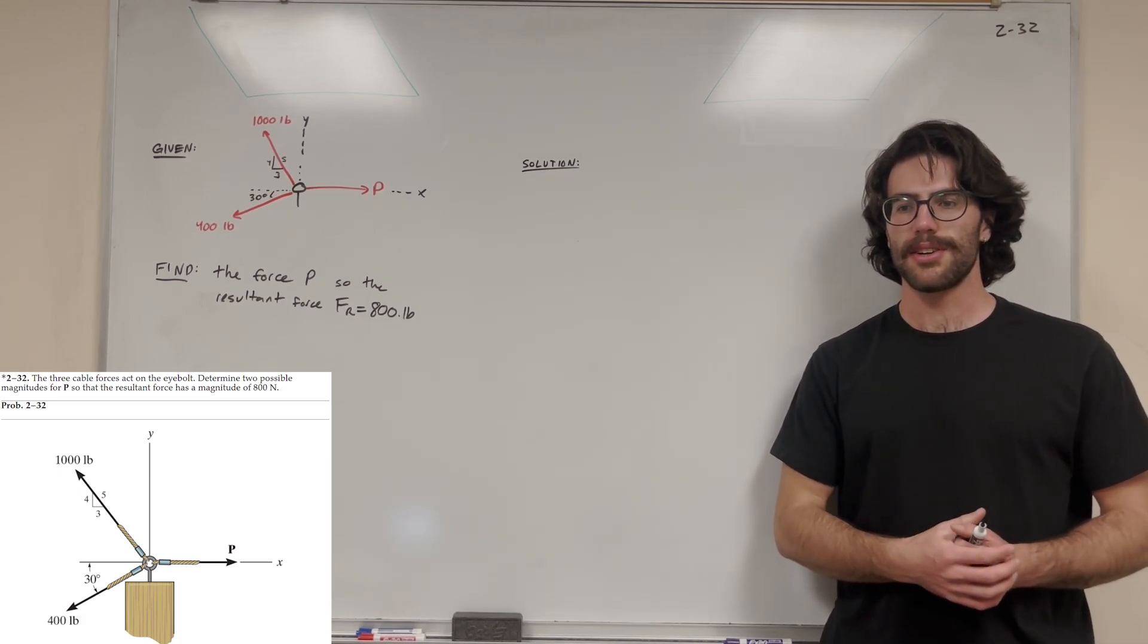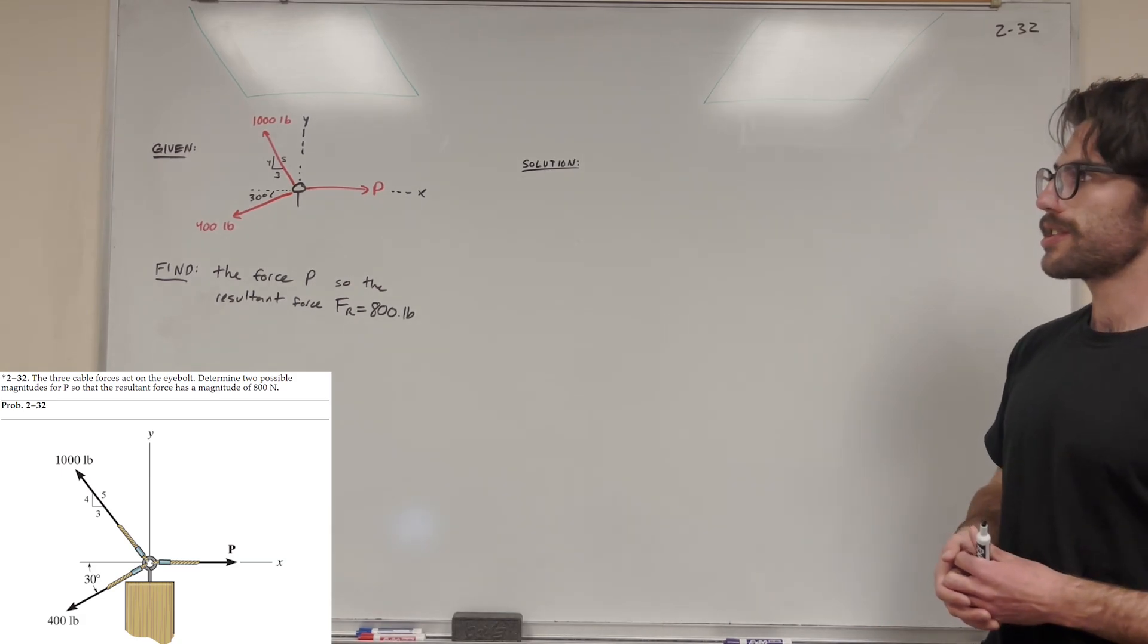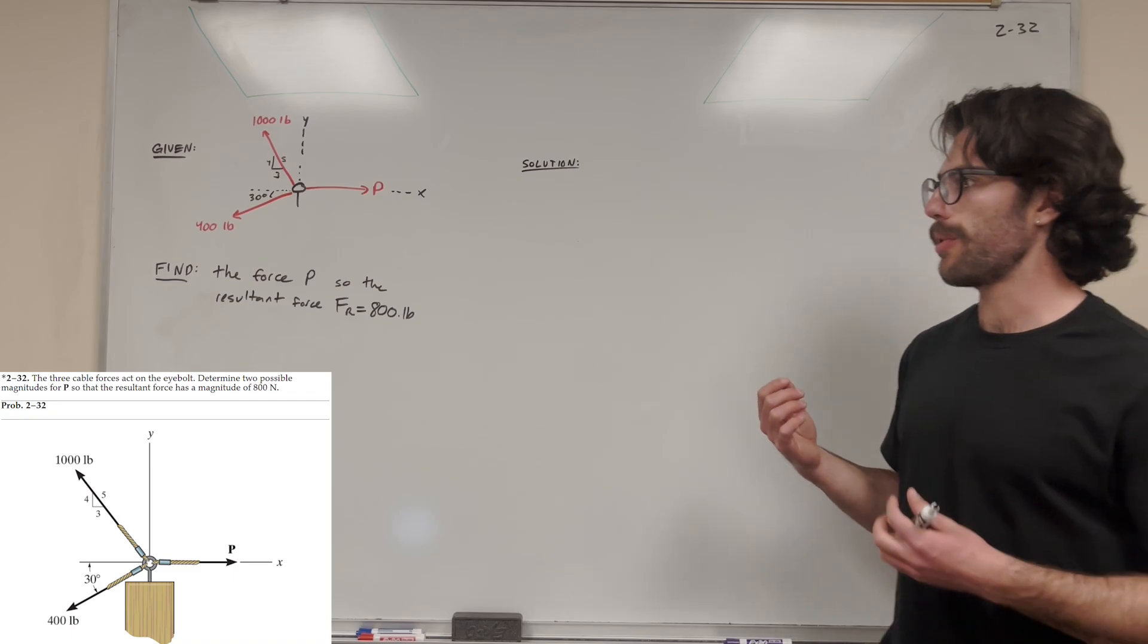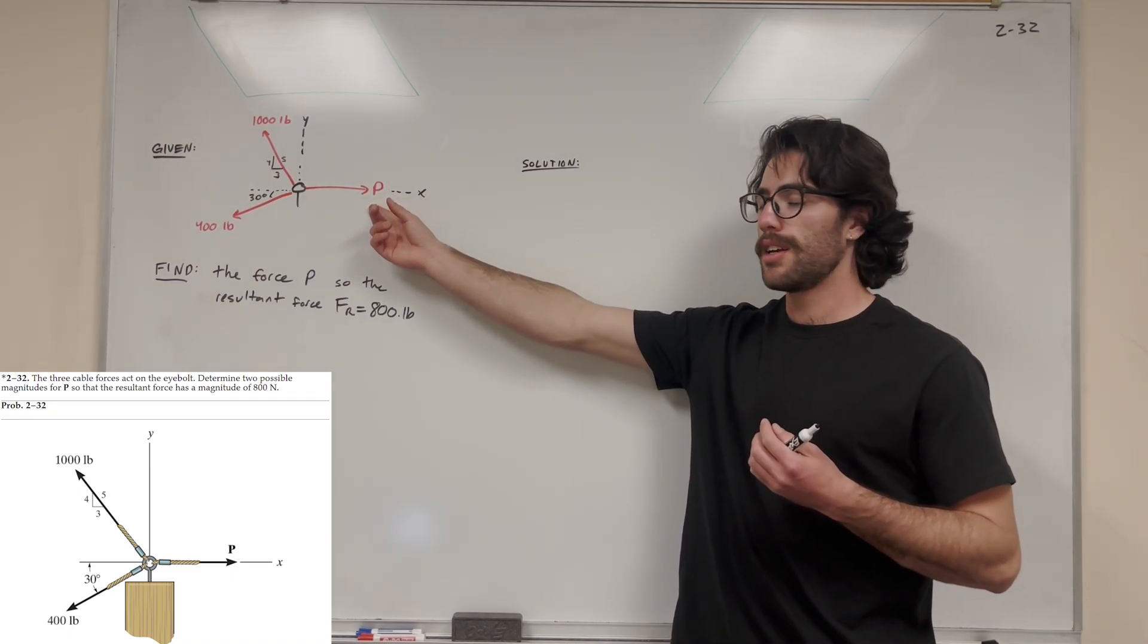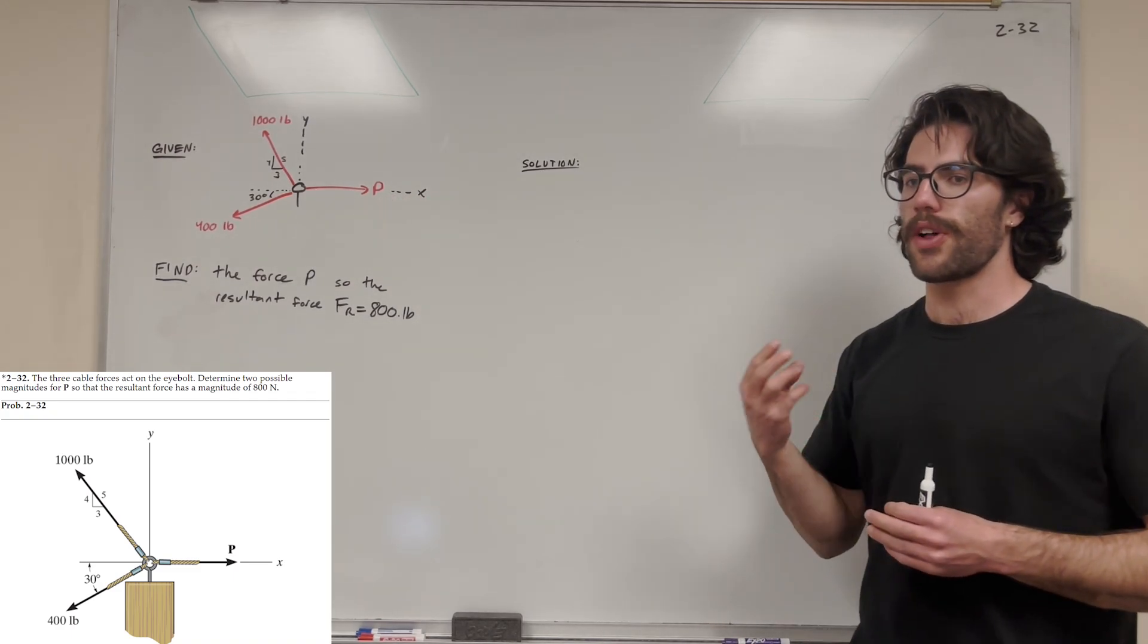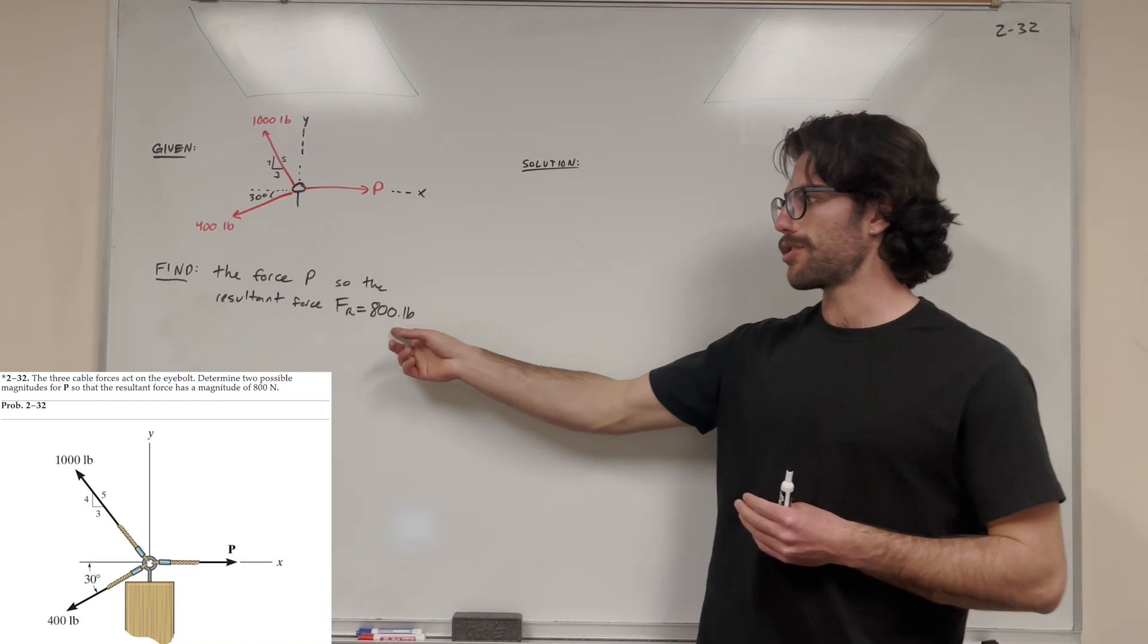What's up, Kyle Gang with MicroStatics. So let's solve this problem. We have these three forces acting on this bolt, and we want to find the force of P so that when we find the resultant force of all three forces, it's equal to 800 pounds.